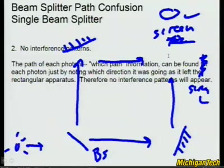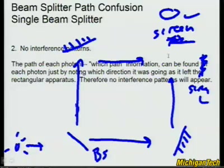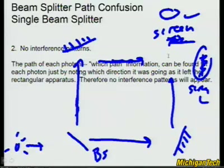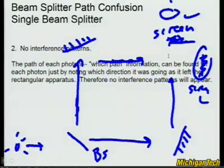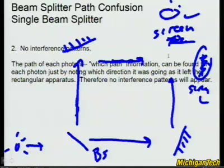The answer is: no interference patterns. That's because path information can be found for each photon, just by noting which direction it was going as it left the rectangular apparatus. All the photons that go this way, bounce off this mirror and go this way — they all end up here. We know which path they took. You get spots on both screens. If your beam splitter is tuned correctly, half the light goes here and half the light goes there. Everybody's happy and you know which path each photon took.